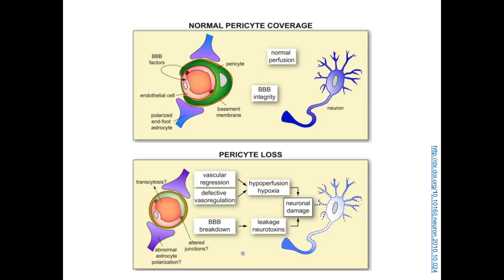Pericytes serve in a similar capacity in the blood-retinal barrier. For instance, pericyte loss is a severe pathological process in diabetic retinopathy, with detrimental consequences for eyesight in millions of patients. In addition, pericytes possess a multipotent differentiation potential, which allows for generation of a number of different cell types, and because of this, these cells are potential targets for tissue repair and therapeutic approaches in regenerative medicine.